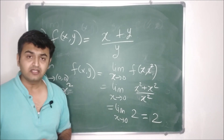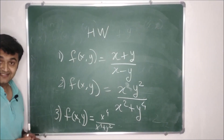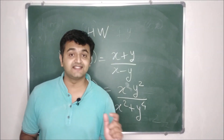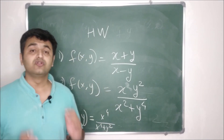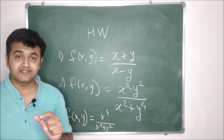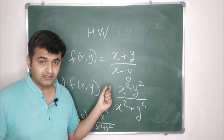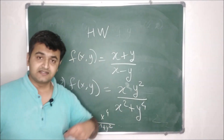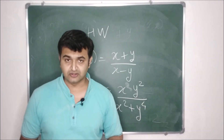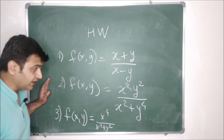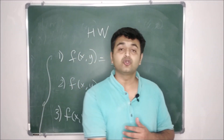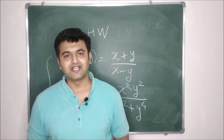I hope all the examples are clear. Now here are three homework problems — try to solve them. For each, show that the limit does not exist as (x, y) → (0, 0). In the comments, tell me the two paths you chose and the limit you got along each path. Once you have two different limits, the limit does not exist. I hope you understood the concept. If yes, don't forget to like, share, and subscribe. Thank you.